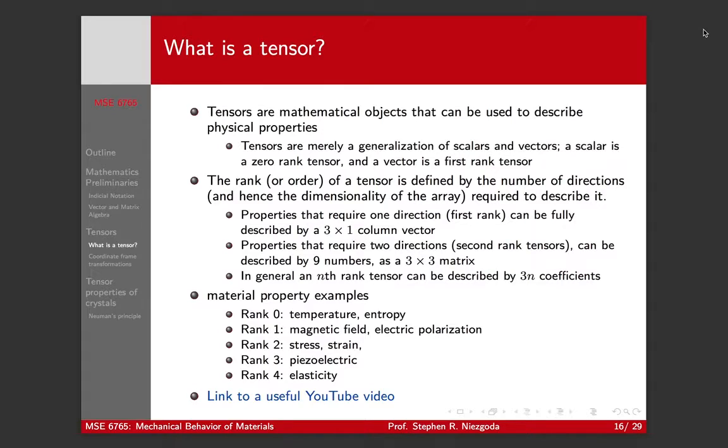An example of a fourth order tensor is the elastic stiffness, because the elastic stiffness relates stress to strain and you need two directions for stress and two directions for strain, so therefore you need four directions for the elasticity tensor.